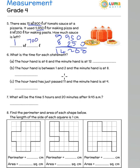What is the time for each statement? The hour hand is at 6 and the minute hand is at 12, so the time is 6. The hour hand is between 1 and 2 and the minute hand is at 8, which means the time is 1:40. 8 fives are 40. The hour hand has just passed 11 and the minute hand is at 4, which means 4 multiplied by 5. So it is 20, and since it's passed 11, it is 11:20.